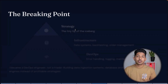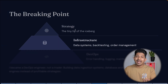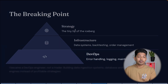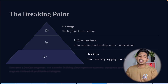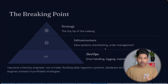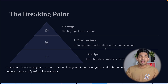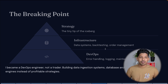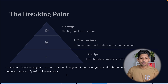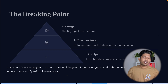What was my breaking point? Writing the strategy was just a tiny tip of the iceberg. I had to do complete infrastructure setup — data systems, backtesting, and order management. I had to become a DevOps engineer, not a trader. I was building data ingestion systems, database architecture, and backtesting engines instead of profitable strategies.